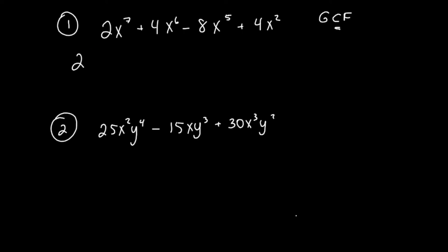Now looking at the variables: I have x to the 7th, x to the 6th, x to the 5th, and x squared — so 7, 6, 5, and 2 of them. What do they all have in common? They all have an x. You take the smallest exponent because that's the most they all share. This one has 7, but this one only has 2. The biggest amount of x's every single one has in common is 2. So you always take out the smallest exponent when doing a GCF. That gives us our GCF: 2x squared.